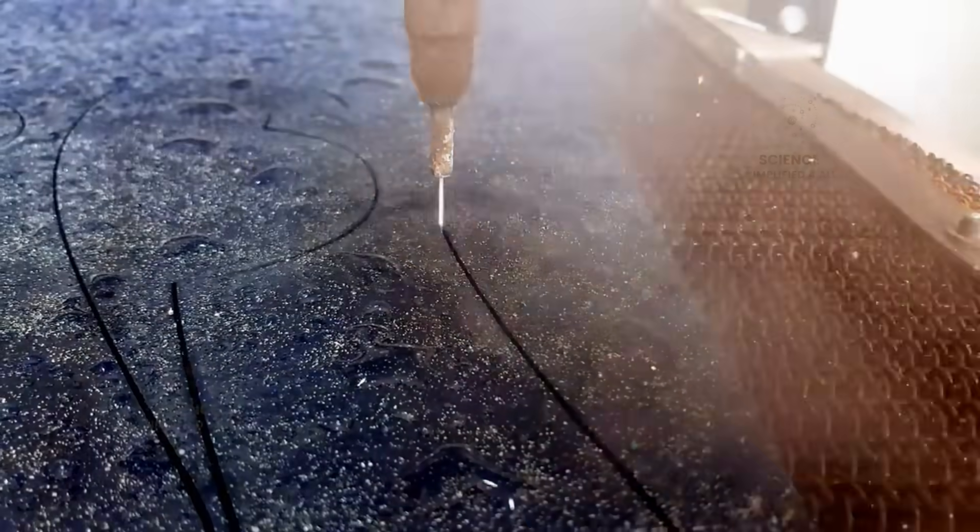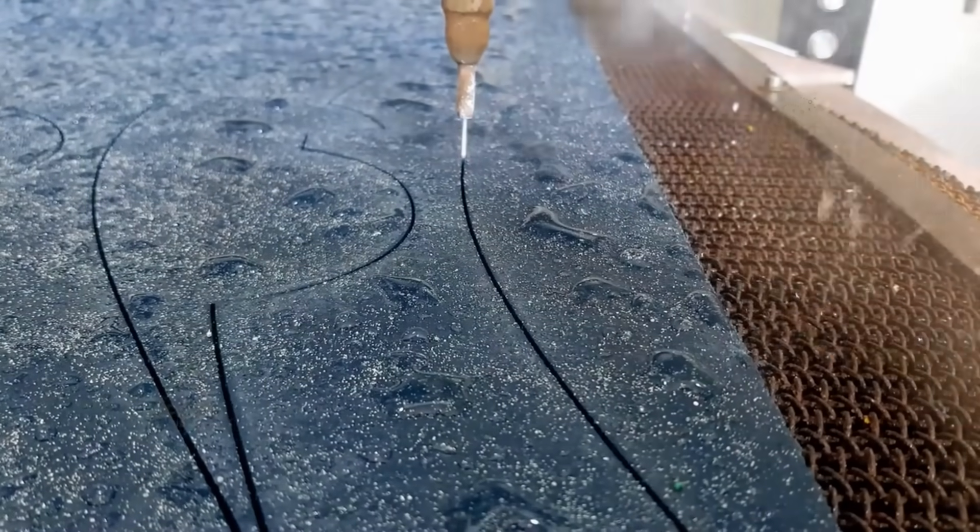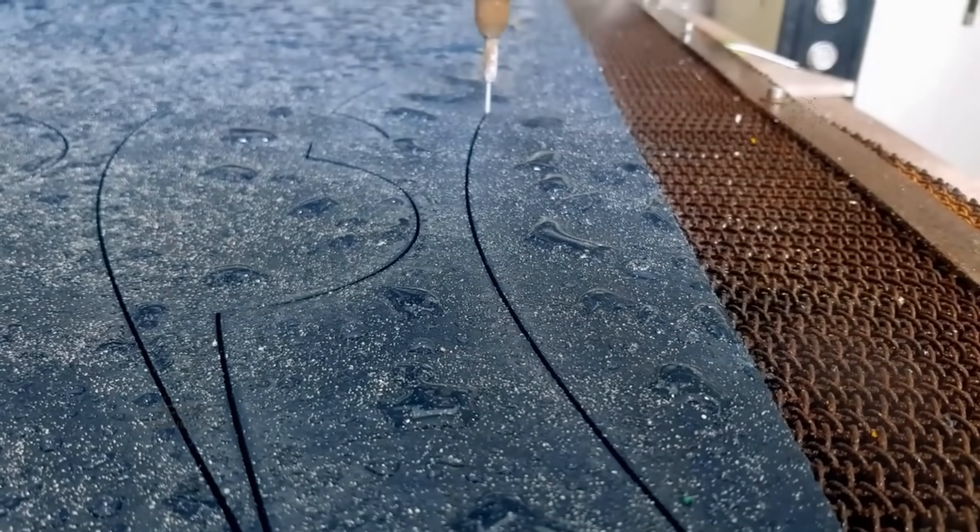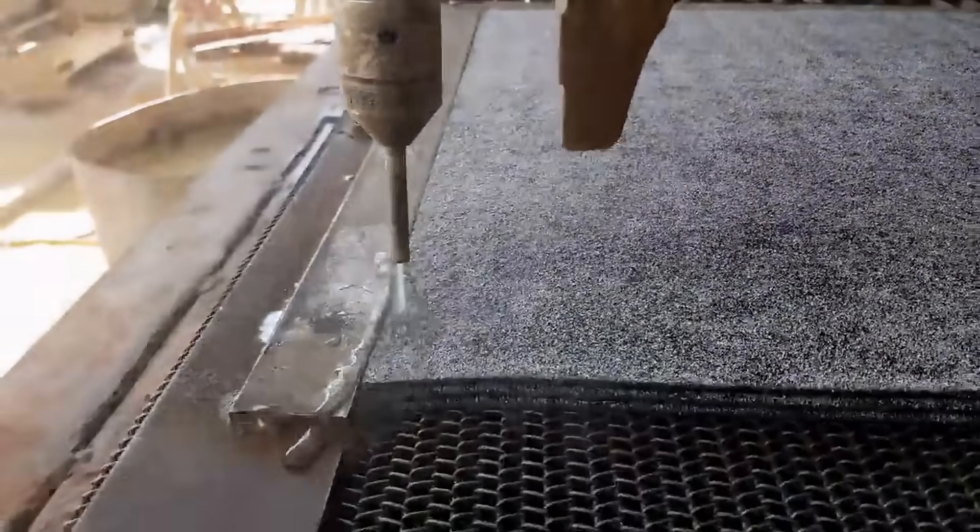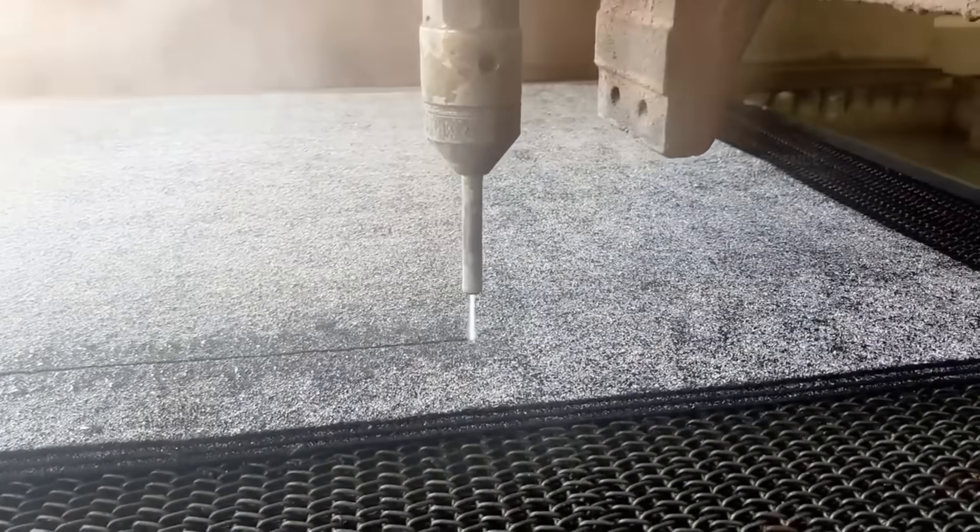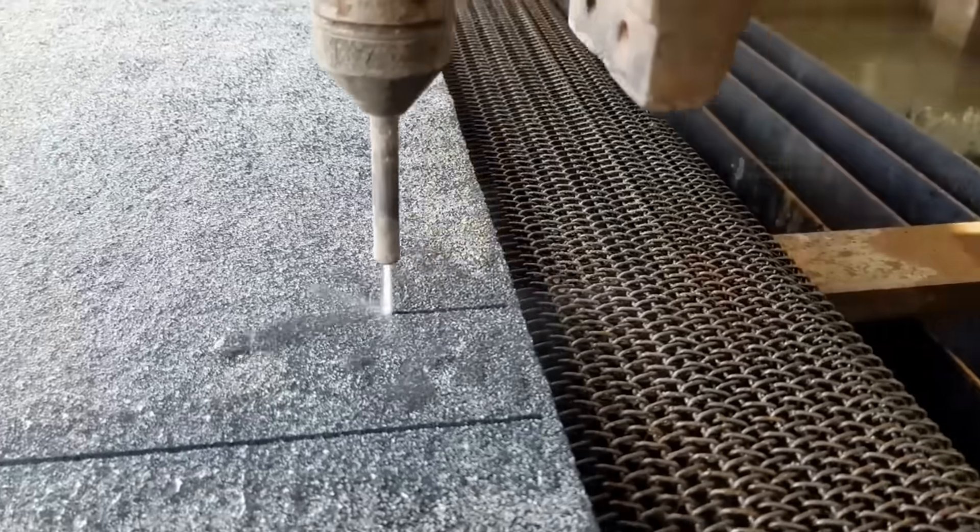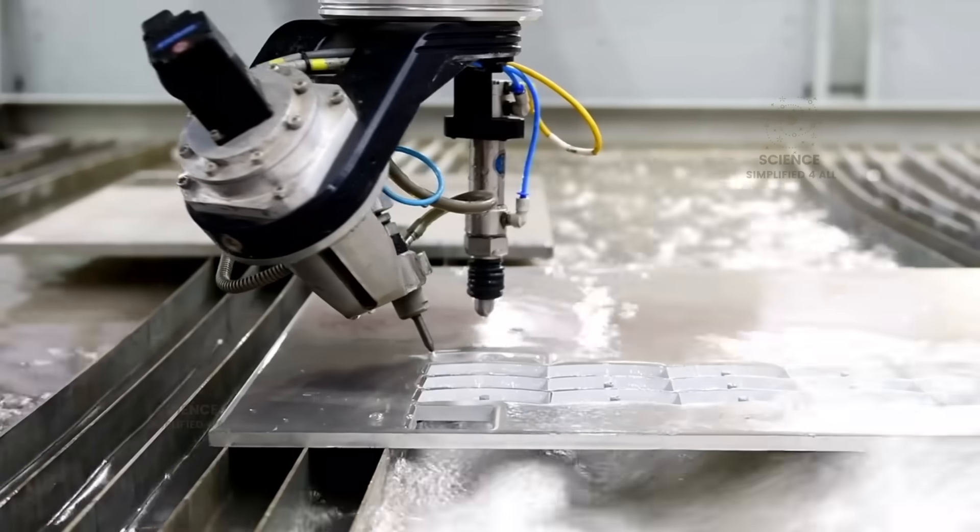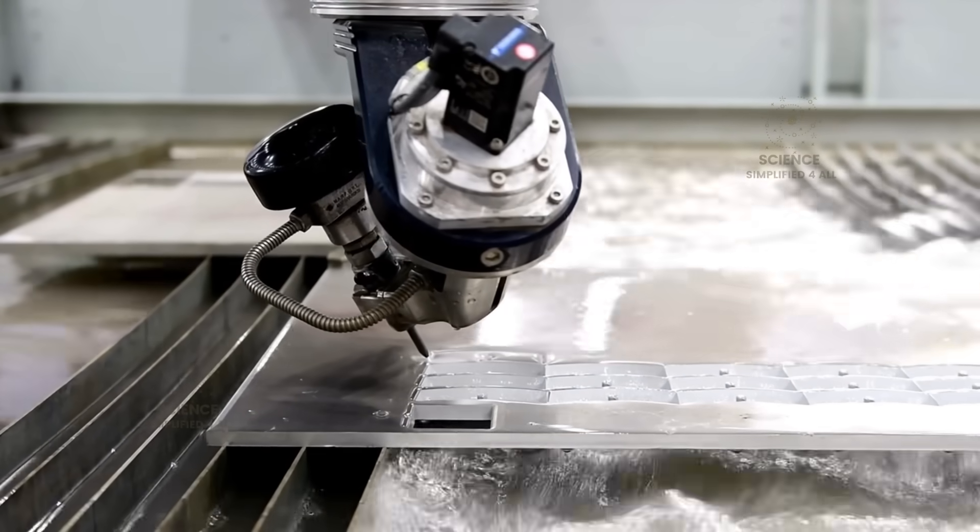But wait, this same water, when used in a high-speed jet, can cut through metal. That technology is called water jet cutting, and the speed of the water inside that jet is around 2,700 kilometers per hour. With that, we can slice through even steel.